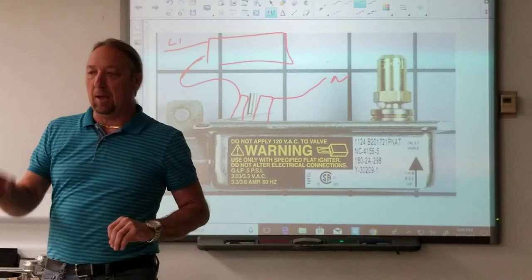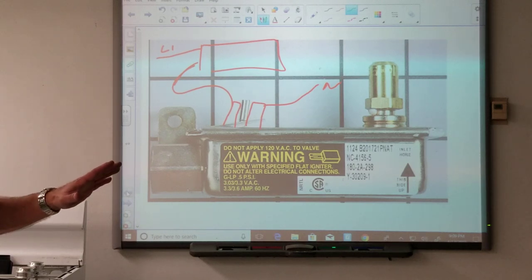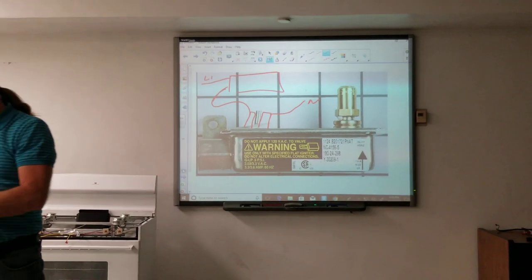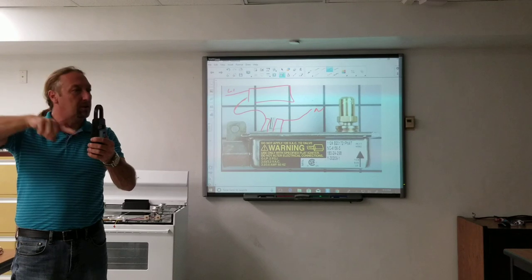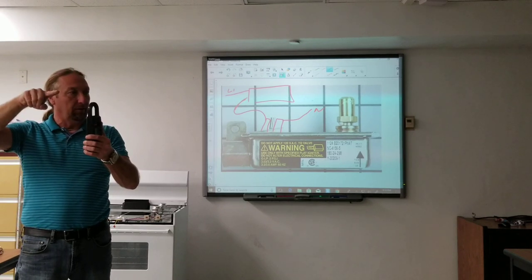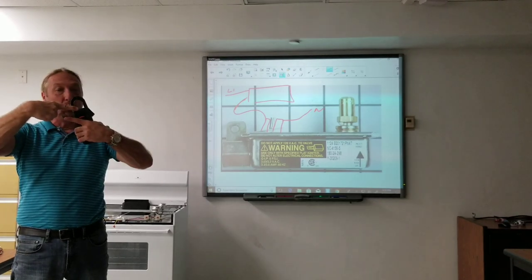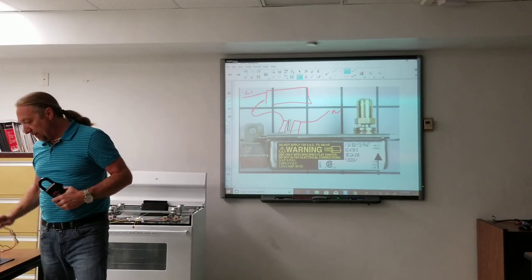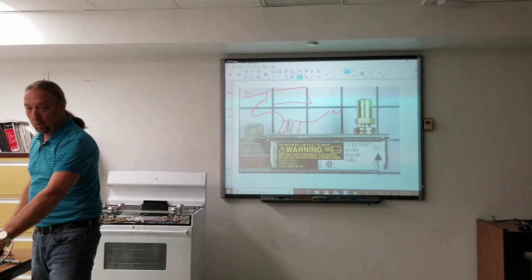When we check amperage we clamp around only one wire. If you clamp around two wires or more you're not going to get a reading. What happens is electricity flows through one wire one way, flows through another wire the other way. When we check amperage around the wire like this, what it's measuring is as electricity flows through the wire it creates a magnetic field in the air. The more electricity, the bigger the magnet. But if you put two wires going the opposite way, the two magnetic fields cancel each other out. The meter can't read it. So you can't go across a power cord like this and measure amperage. You have to go down where the wires in the oven break up to a single wire.